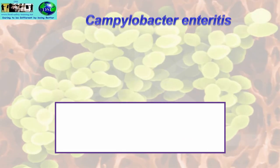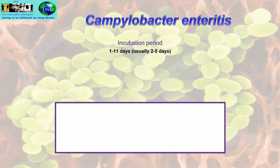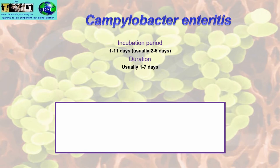Looking at Campylobacter enteritis: the incubation period is 1 to 11 days, usually 2 to 5 days — you can see how different this is from food poisoning, because the incubation period tends to be longer. Duration of the illness is usually 1 to 7 days, which is quite similar to food poisoning.